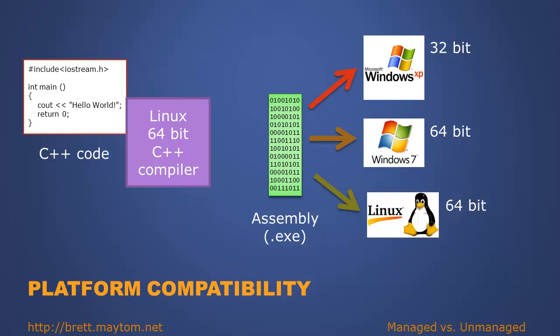On the other hand, we can take that same code and compile it using a Linux 64-bit compiler. That application assembly will now be Linux compatible and will run perfectly on a Linux 64-bit environment. But that assembly will not run on 32-bit or 64-bit Windows. This platform compatibility is a typical problem that existed in older applications.